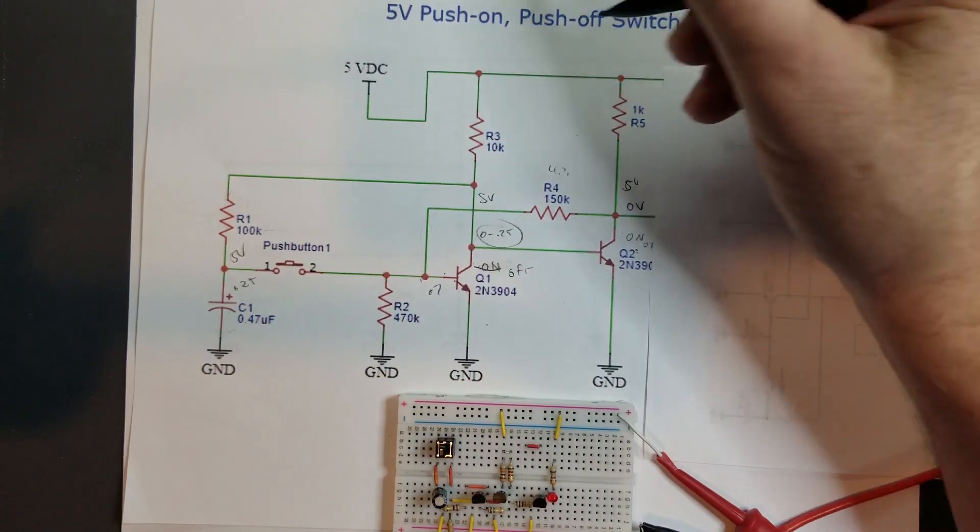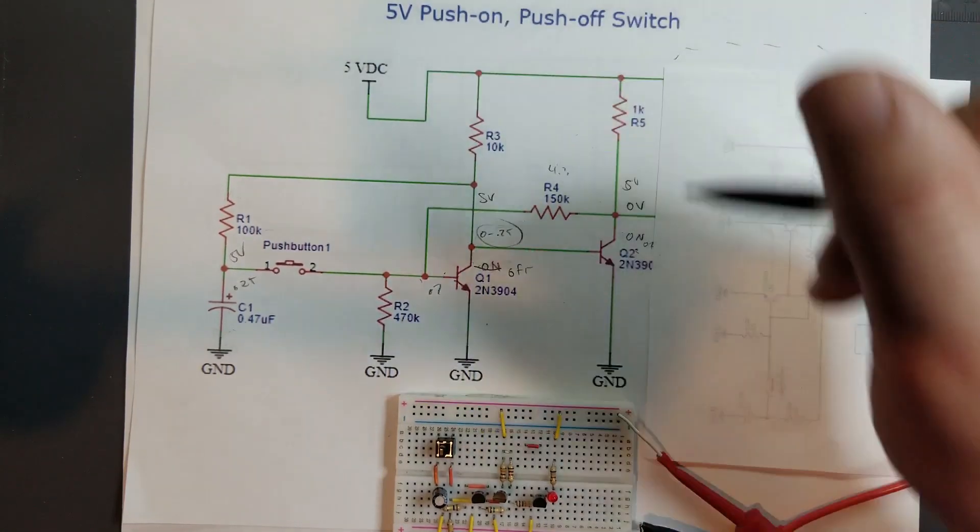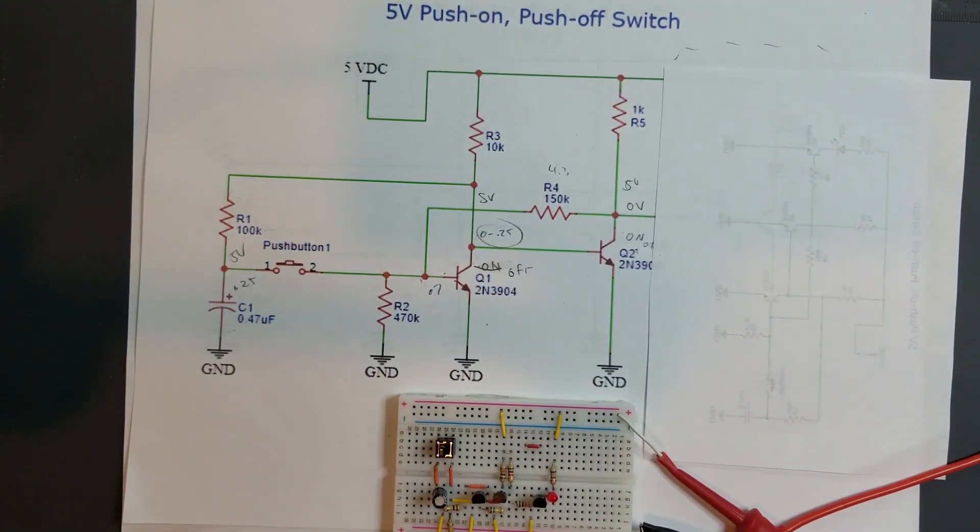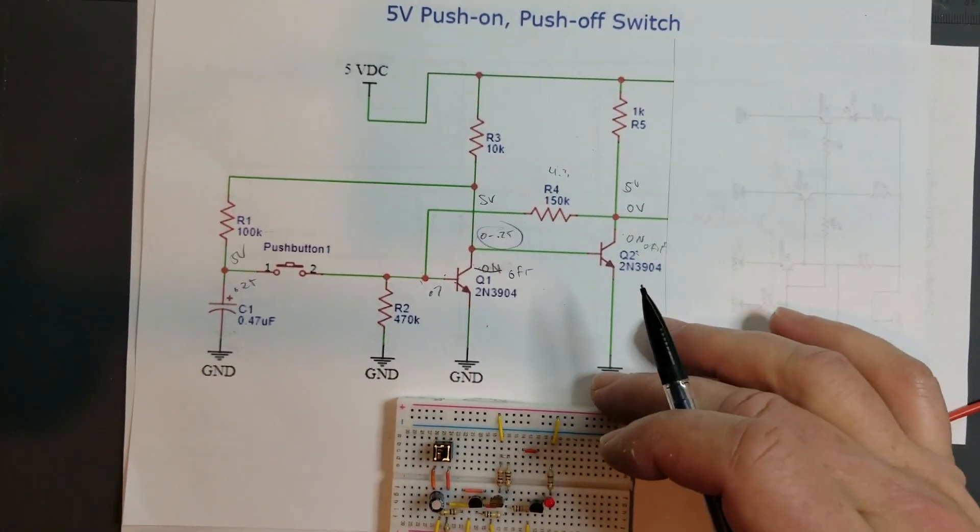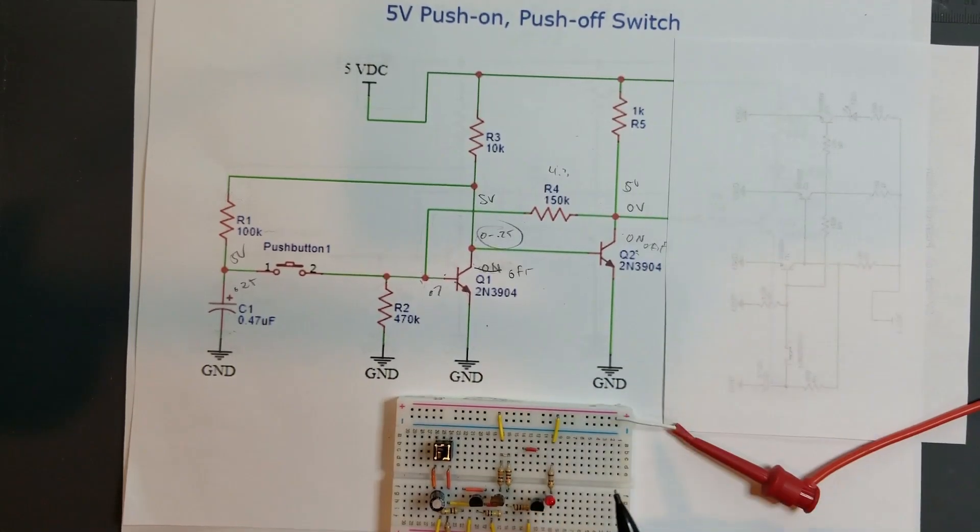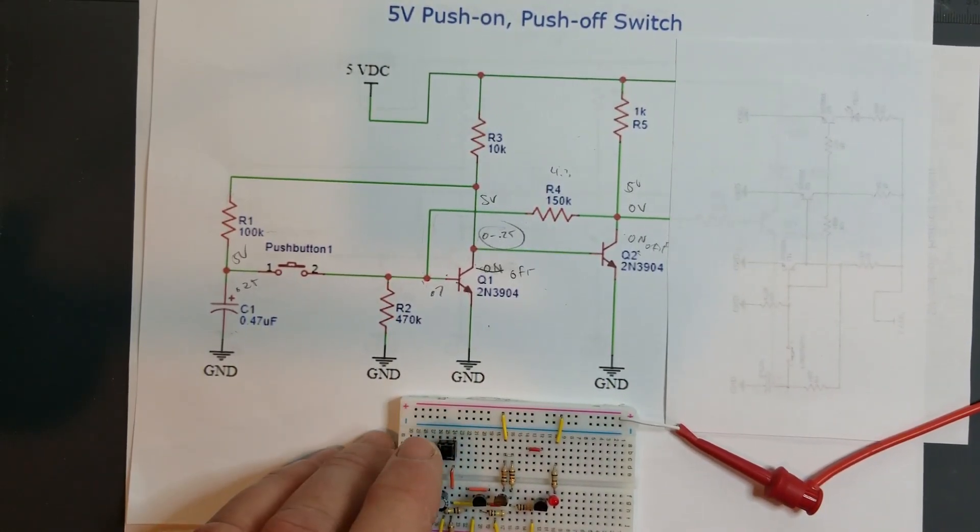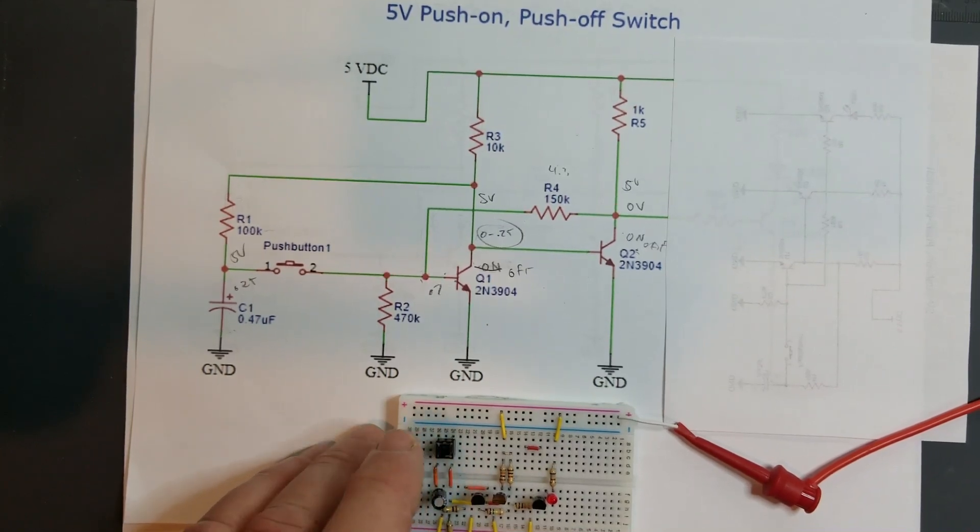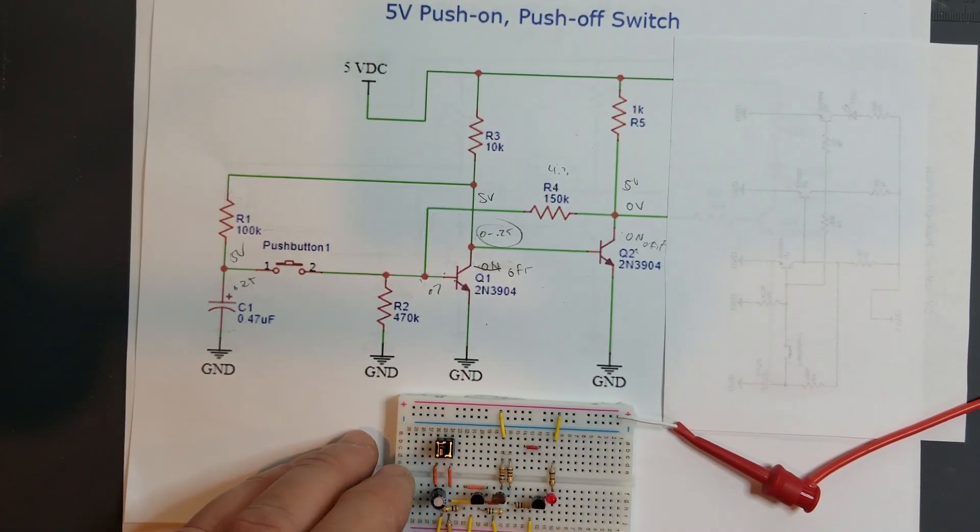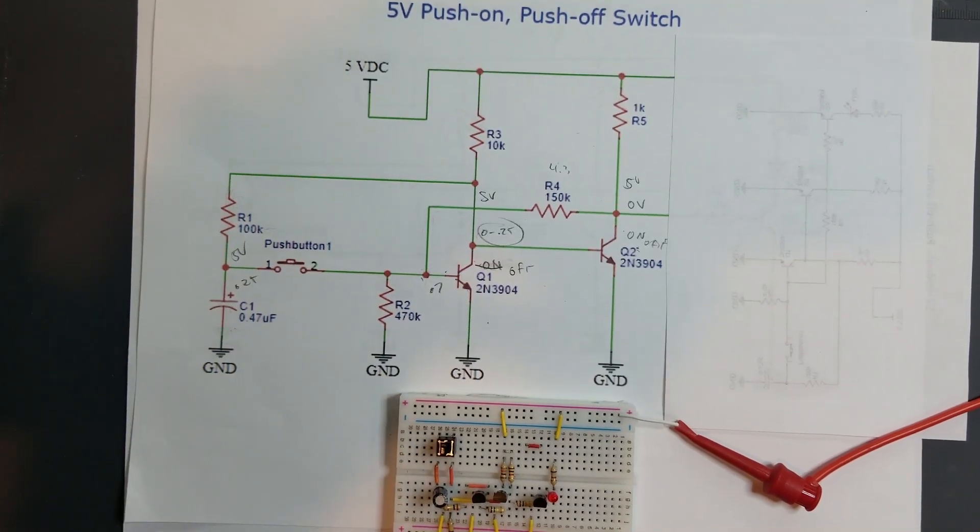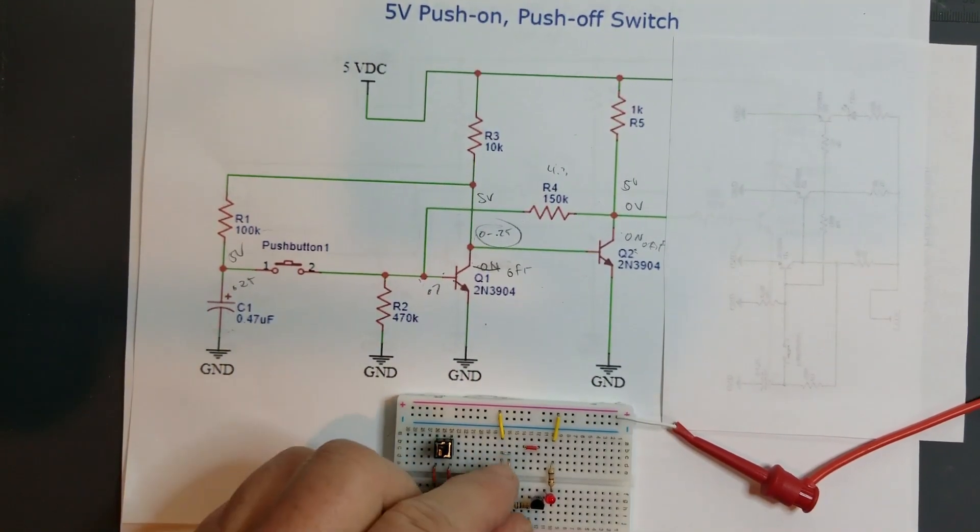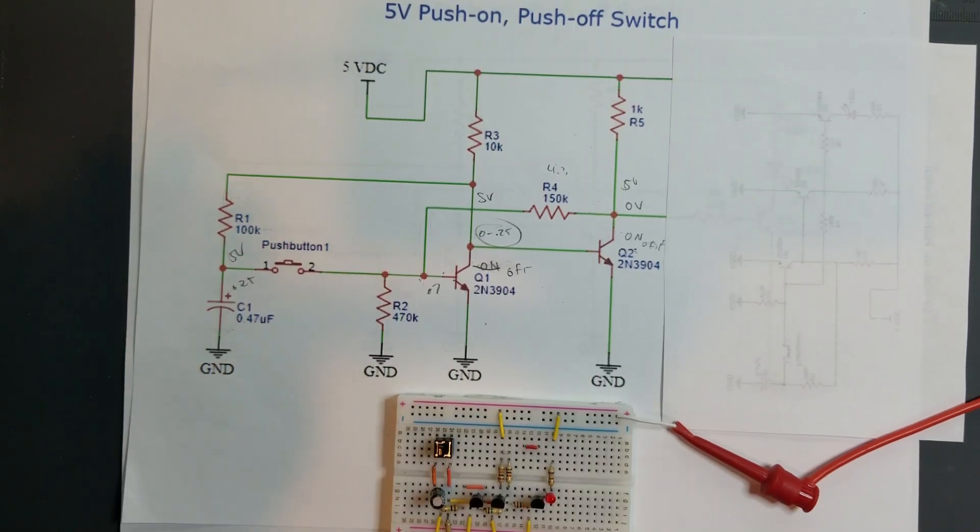That's the latching 5 volt version. And it makes sense that somebody would request this circuit because there's a lot of reasons why someone would want to use a 5 volt version for digital circuits, maybe USB powered, etc. So that's the 5 volt version of the push-on push-off soft latch circuit. Comments or questions are always welcome on the video, and if you like this video please give it a thumbs up. And don't forget to subscribe if you haven't already subscribed to this channel. Thanks for watching.